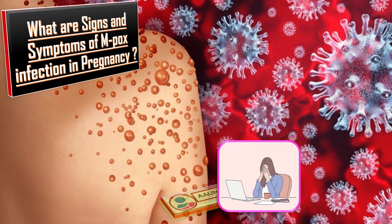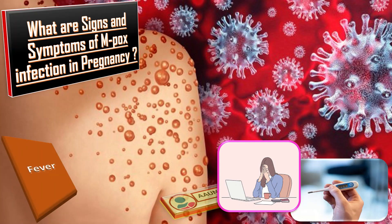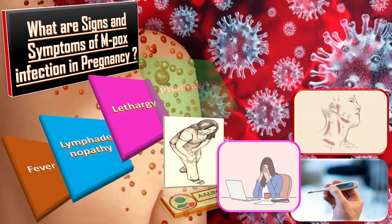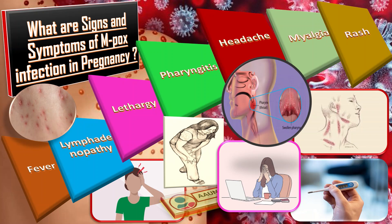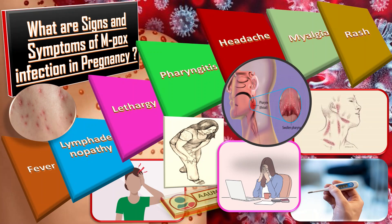What are the signs and symptoms of MPOX infection, especially during pregnancy? The signs and symptoms in people who are pregnant appear similar to those of non-pregnant people with MPOX infection, and those include fever, lymphadenopathy, lethargy, pharyngitis, headache, myalgia, and rash. The rash associated with MPOX infection can be found in the anogenital area, trunk, arms, legs, face, palms, and soles.